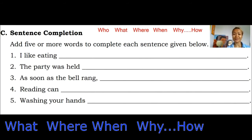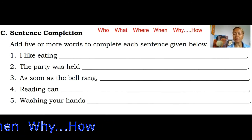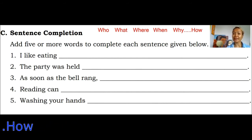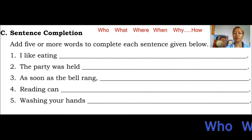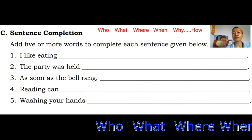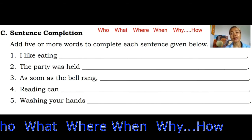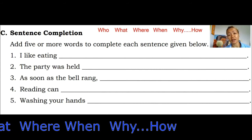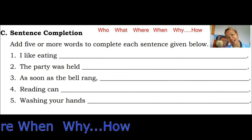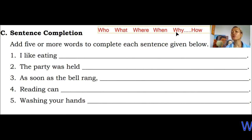For C, sentence completion, we're told to add five or more words to complete each sentence given below. A trick you can use is to think of the five W's: who, what, where, when, why, and how — that's five W's plus an H. For number one, 'I like eating' — the who is already there, it's 'I.' Think about what, where, and when: what — cake; where — at home; when — after dinner.